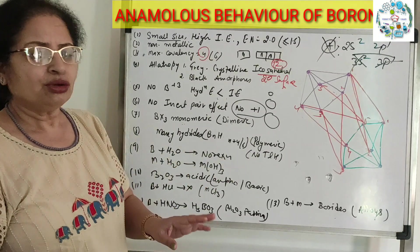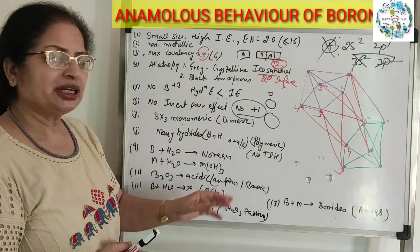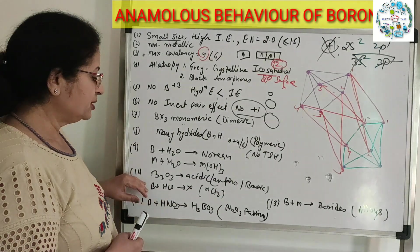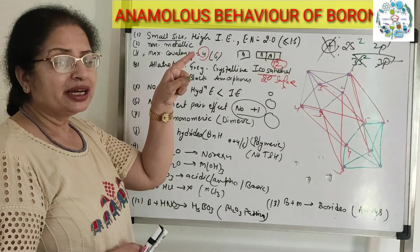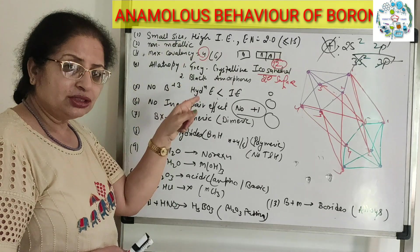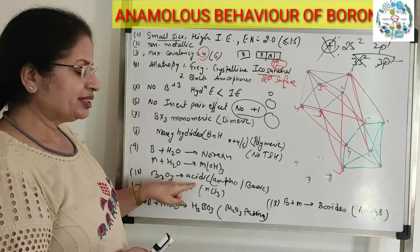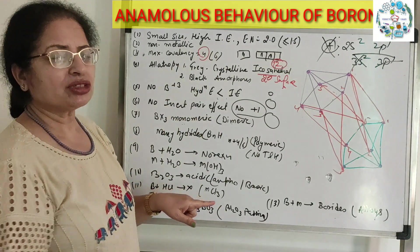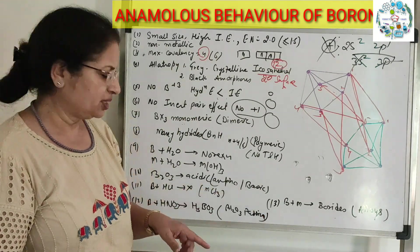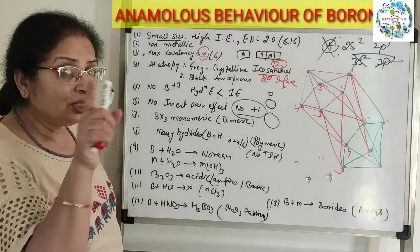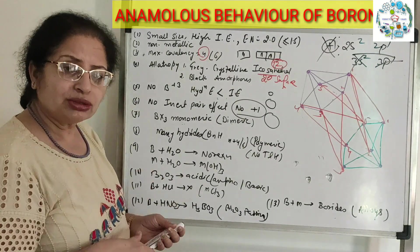Now coming to the chemical properties: boron oxide is formed, which has a non-metallic character and is acidic in nature. Boron oxide is acidic, whereas the oxides of other group 13 elements are amphoteric or basic in nature. Boron also does not react with non-oxidizing acids.